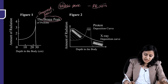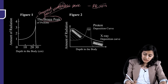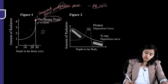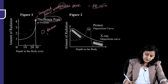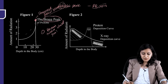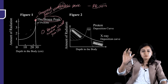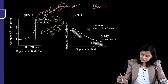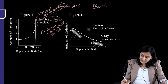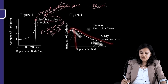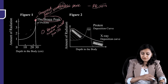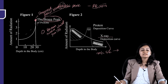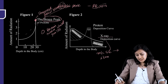The advantage of the Bragg peak is that superficial structures are protected. The proton beam delivers targeted, pencil-beam-like radiotherapy affecting only the tumor while protecting surrounding normal tissue. For a child with a brain tumor requiring radiotherapy, proton beam is preferred to avoid damaging growing neurons. In contrast, X-rays deliver maximum dose at the entry point — hence the most common side effect of radiotherapy is skin erythema.